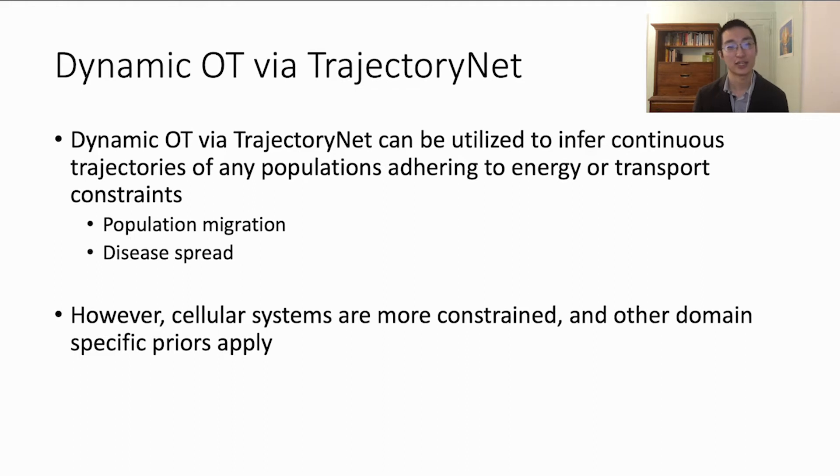So just to recap here, we have this baseline TrajectoryNet model that is a continuous normalizing flow with an energy penalty, which can be used in other applications where energy is minimized, but we will now show how to use it better for modeling cells. We have more information about cellular systems, which we don't have in other systems, and we will show how to build a more accurate model from this.